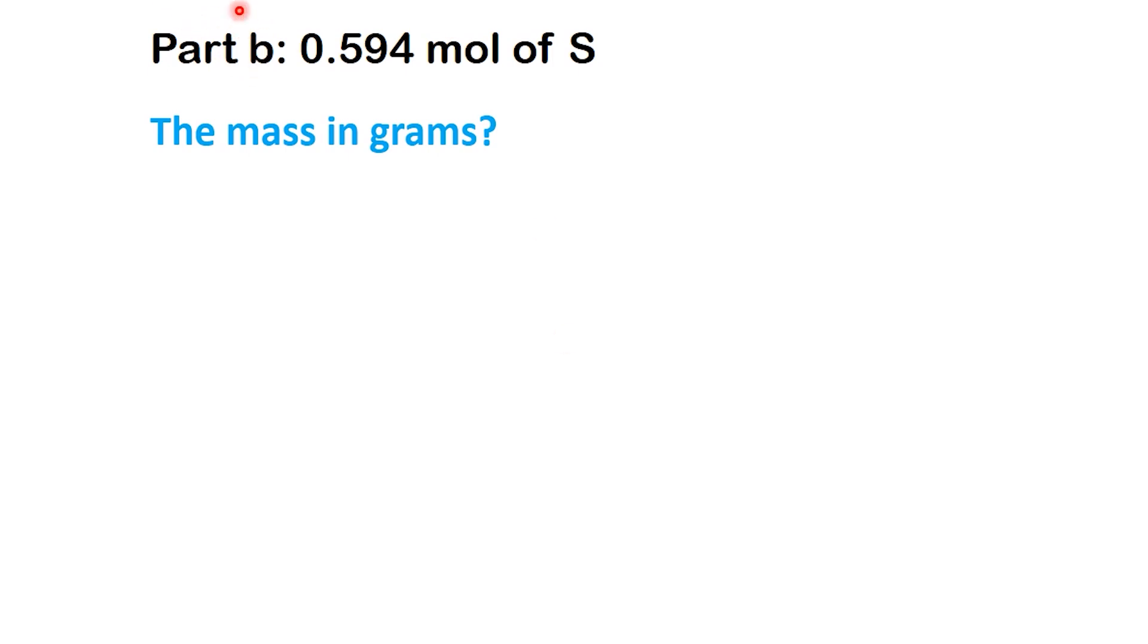Now, let's move on to part B. The question says, calculate the mass in grams of 0.594 moles of sulfur. So, we're given 0.594 moles of sulfur, and we need to convert this into grams.